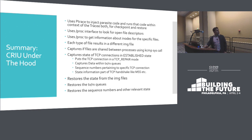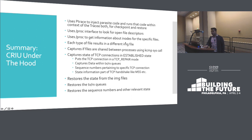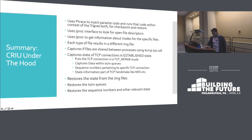In summary: CRIU uses the ptrace system call to inject parasite code into the traced process, extracts all memory state, and saves it in an image file. It also depends on the /proc interface to account for all file descriptors and inodes associated with specific files. It also relies on the kcmp system call, which is responsible for capturing state of inter-process communication — basically pipes. So at this point all memory states are preserved. Now let's talk about TCP connections.